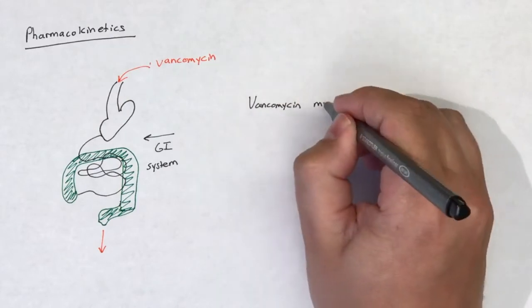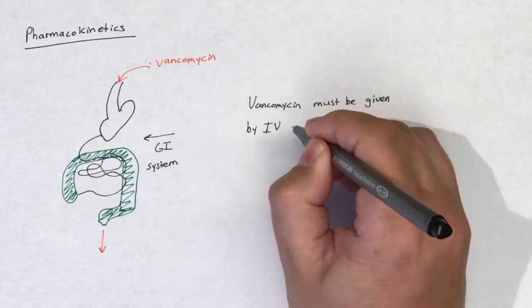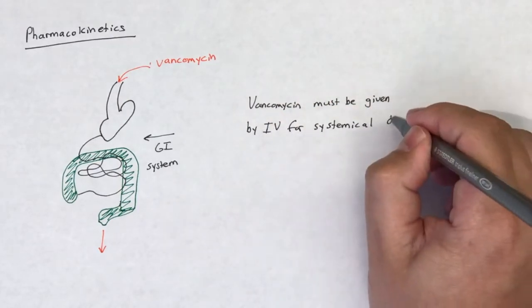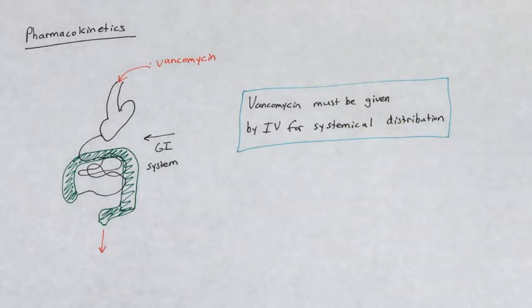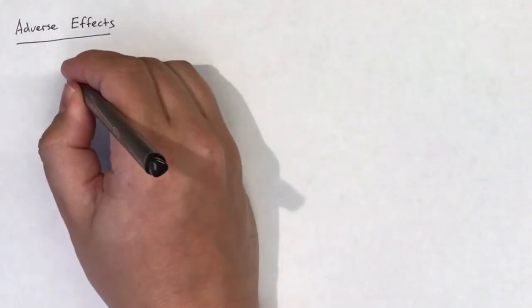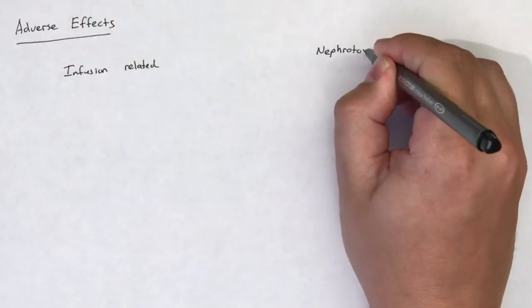These pharmacokinetic limitations are purely dictated by the structure of vancomycin not being amenable to absorption across the GI mucosa. These same limitations apply to lipoglycopeptides. Key adverse effects include infusion-related reactions and nephrotoxicity.